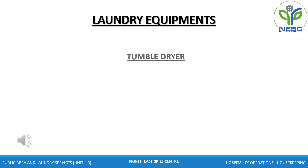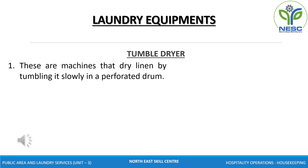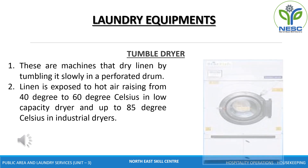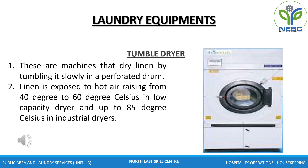Tumble dryers. These are machines that dry linen by tumbling it slowly in a perforated drum, exposed to hot air ranging from 40 to 60 degrees Celsius in low capacity dryers and going up to 85 degrees Celsius in industrial dryers. The machines may be programmed for delicate articles with low or no heat. Most dryers have microprocessor computer control systems. The length of cycle depends on the moisture absorbency of the fabric and whether it is to be completely dry. Appropriate drying time is 30 to 40 minutes.